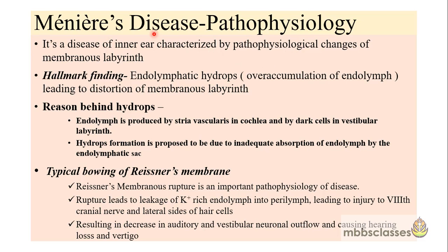The pathophysiological changes are seen in the membranous labyrinth, with the hallmark finding being endolymphatic hydrops — that is, there is abnormal accumulation of endolymph which leads to distortion of the membranous labyrinth. This endolymph is produced by the stria vascularis, situated in the lateral wall of the cochlear duct, and by the dark cells in the vestibular labyrinth. The reason behind hydrops formation is proposed to be due to inadequate absorption of endolymph by the endolymphatic sac.